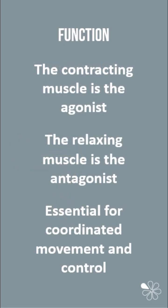As these muscles work in pairs, the contracting or shortening muscle is called the agonist and the relaxing and lengthening muscle is called the antagonist. Note that one muscle can be both an agonist and an antagonist, depending on whether it is contracting or relaxing. These actions are essential for coordinated movement and control of the skeleton and body.